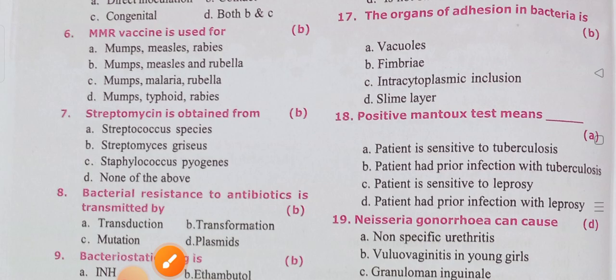The measles vaccine is given when the child completes 9 months — at the 10th month entry. After 9 months are complete, it is given in the 10th month.